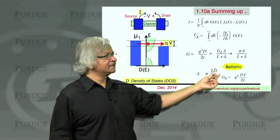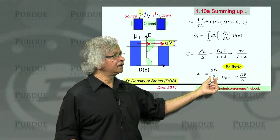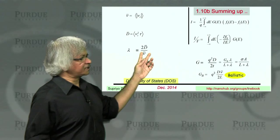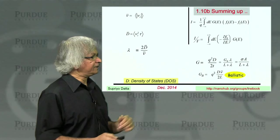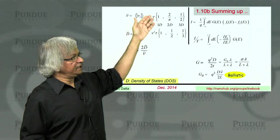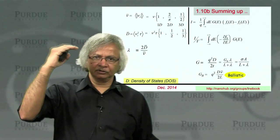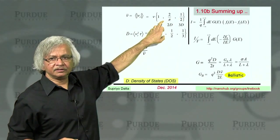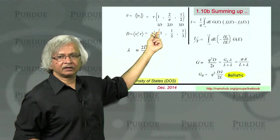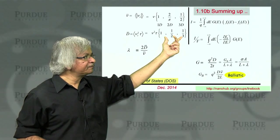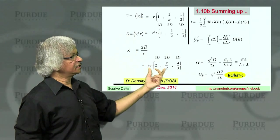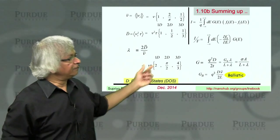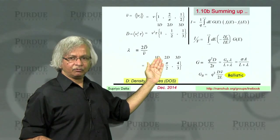Lambda is defined as twice the diffusion coefficient divided by the average velocity. The average velocity V corresponds to electrons at a particular energy, with different geometrical factors in 1D, 2D, and 3D. The diffusion coefficient is V squared times tau, and from these, lambda works out to V times tau—velocity times the mean free time—which is normally what you would call the mean free path, with an extra geometrical factor depending on dimensionality.